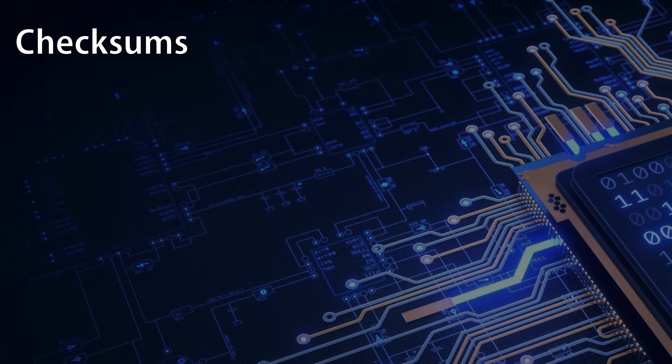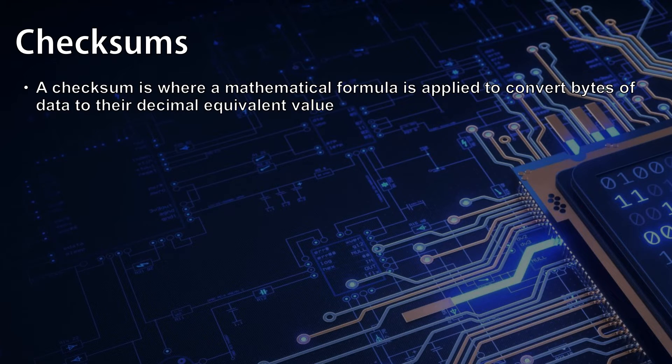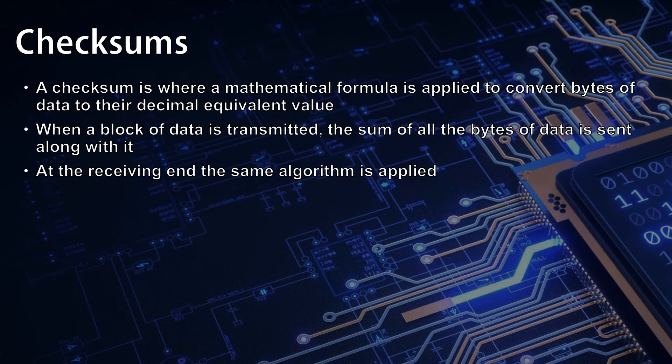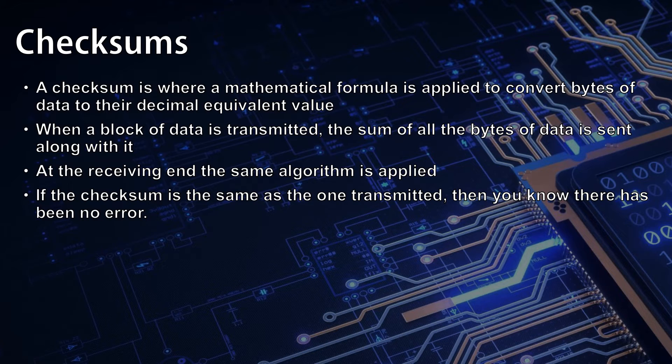A checksum is where a mathematical formula is applied to convert bytes of data to their decimal equivalent value. When a block of data is transmitted, the sum of all the bytes of data is sent along with it. At the receiving end, the same algorithm is applied to calculate the decimal equivalent value of each of the bytes and sum them together. If the checksum is the same as the one that was transmitted, then you know there has been no error.